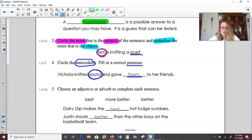Number four says to circle the antecedent and fill in a correct pronoun. Antecedent is just a fancy word for the noun that the pronoun is describing. Victoria knitted socks and gave them to her friends. Them is our pronoun. Socks is plural, so we need a plural pronoun.